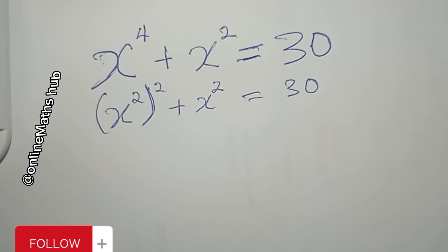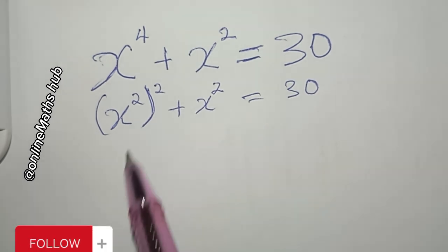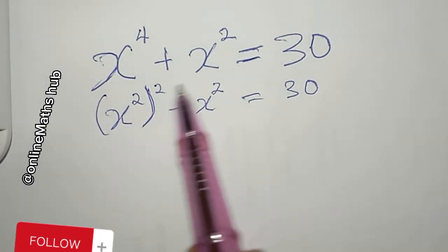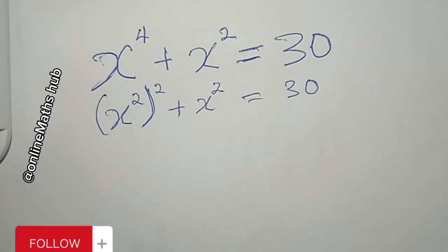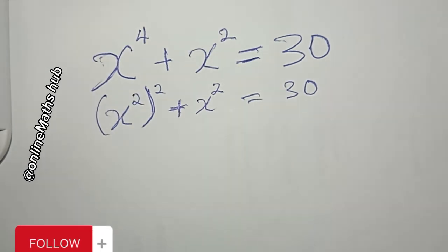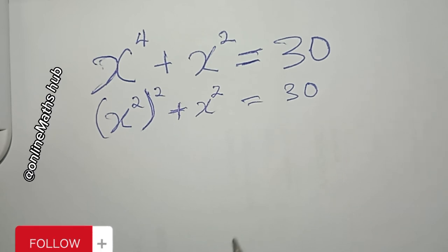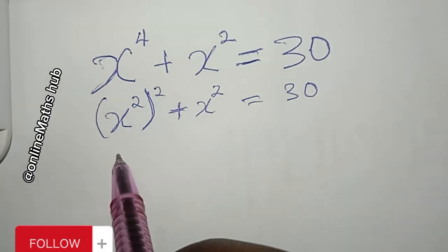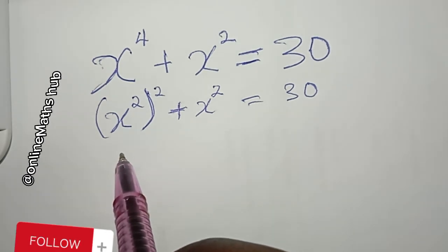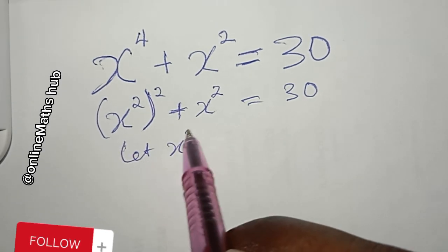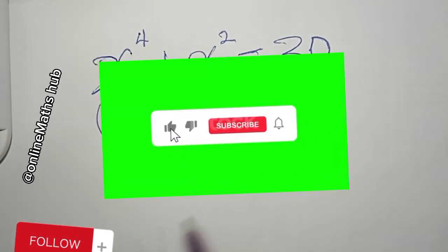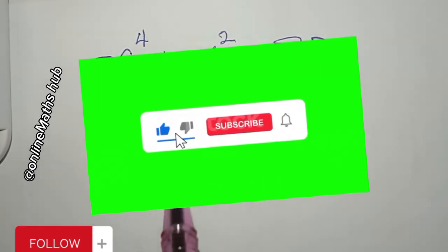What I'm going to do next is set x squared to be another variable so that I can solve it more conveniently. Let's set x squared to be equal to m.